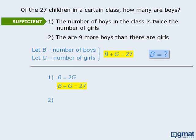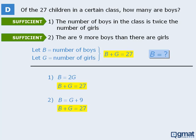Now on to statement 2. Here we are told that the number of boys is 9 more than the number of girls. So we can write B equals G plus 9. Once again, if we add the information we derived earlier, we have two equations which we could use to solve for B. So statement 2 is sufficient, which means our answer is D. Let's try a few more of these.